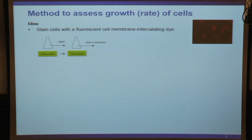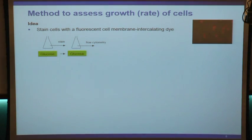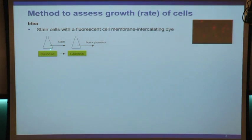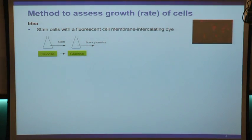So each daughter cell would have about half as many dye molecules - with every division, the fluorescence of a cell would be halved. To check whether this really works, we took cells, grew them on glucose, stained them by putting these dye molecules onto them, put them back on glucose, and followed the cells growing with flow cytometry.